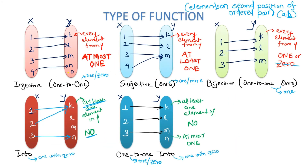Now let's look at different types of functions. The first set is always checked to determine whether the relation is a function — each element must have exactly one outgoing arrow. The second set is used to determine the type of function, based on how many incoming arrows each element receives.